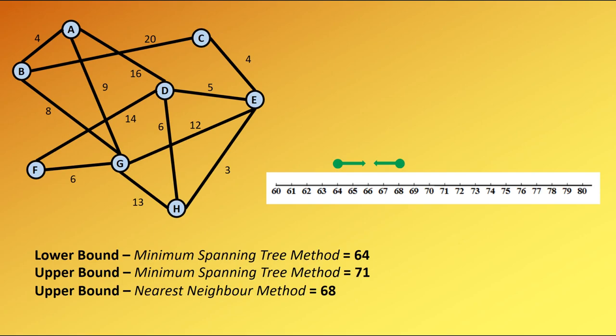When working with the nearest neighbour method, the first thing you've got to be careful of is constructing that table of minimum connectors, and the second thing is making sure that you do find the nearest neighbour each time for each of the starting vertices. Be very careful if you have options, and just make sure that you follow them through. Other than that, it is a fairly straightforward algorithm, not too many stages, nothing too complicated, but good luck when using it.